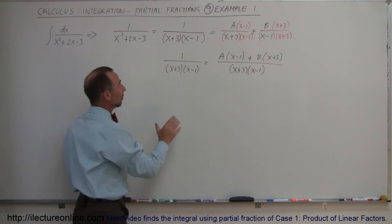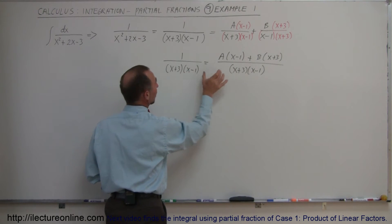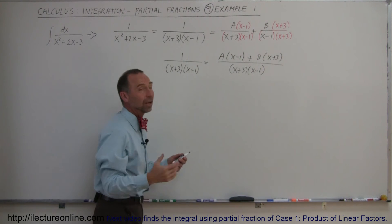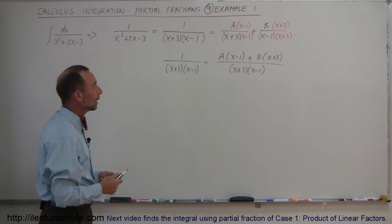So now you can see, since these two fractions have the same denominator, that means the two numerators must be equal. One must be equal to this, and that should allow us to find out what A and B are equal to.